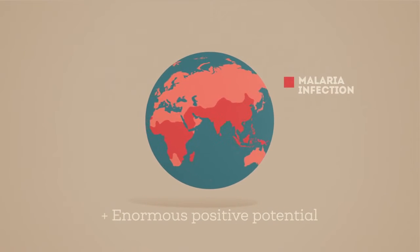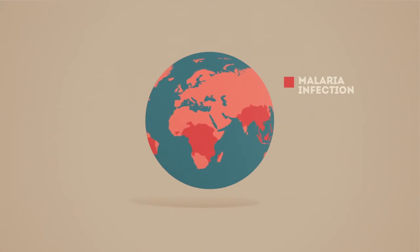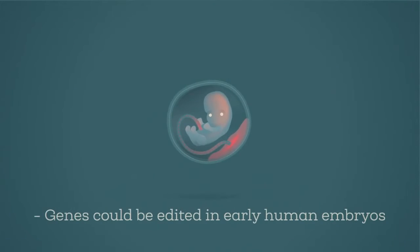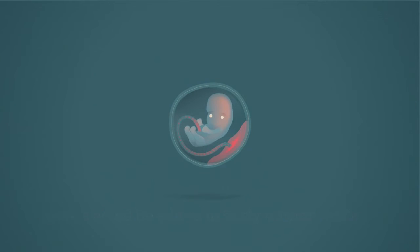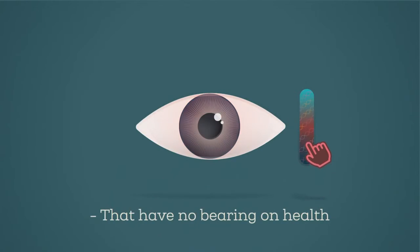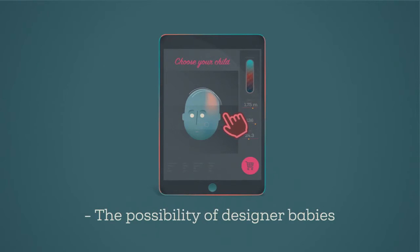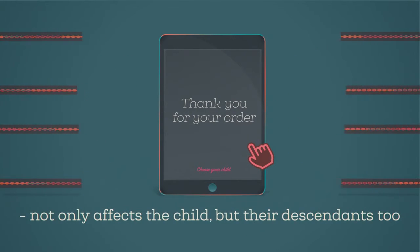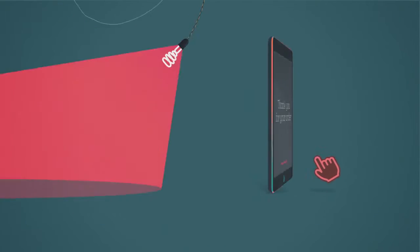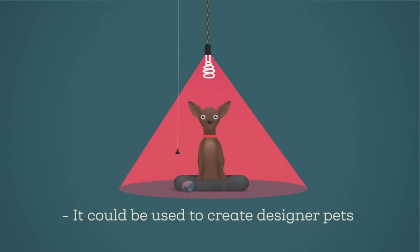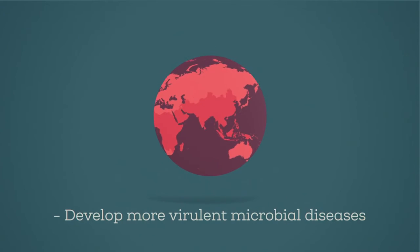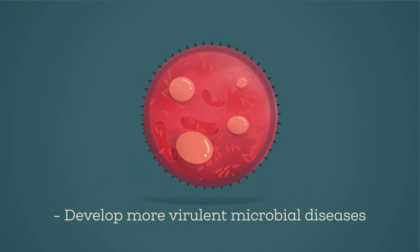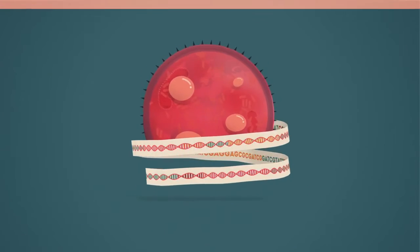So genome editing has enormous positive potential, but what about possible downsides? Genes could be edited in early human embryos to alter characteristics such as eye color that have no bearing on health — this raises the possibility of designer babies. And changing an embryo's DNA would not only affect the child but their descendants too. These same techniques could also be used to create designer pets or develop more virulent microbial diseases.